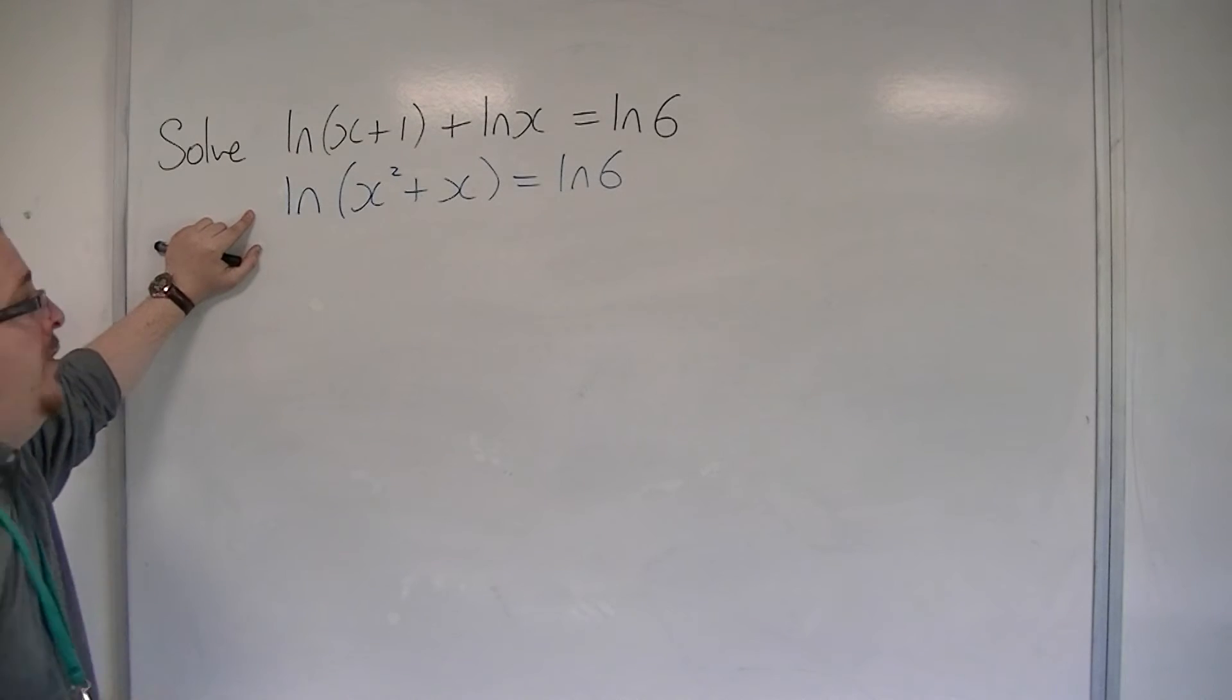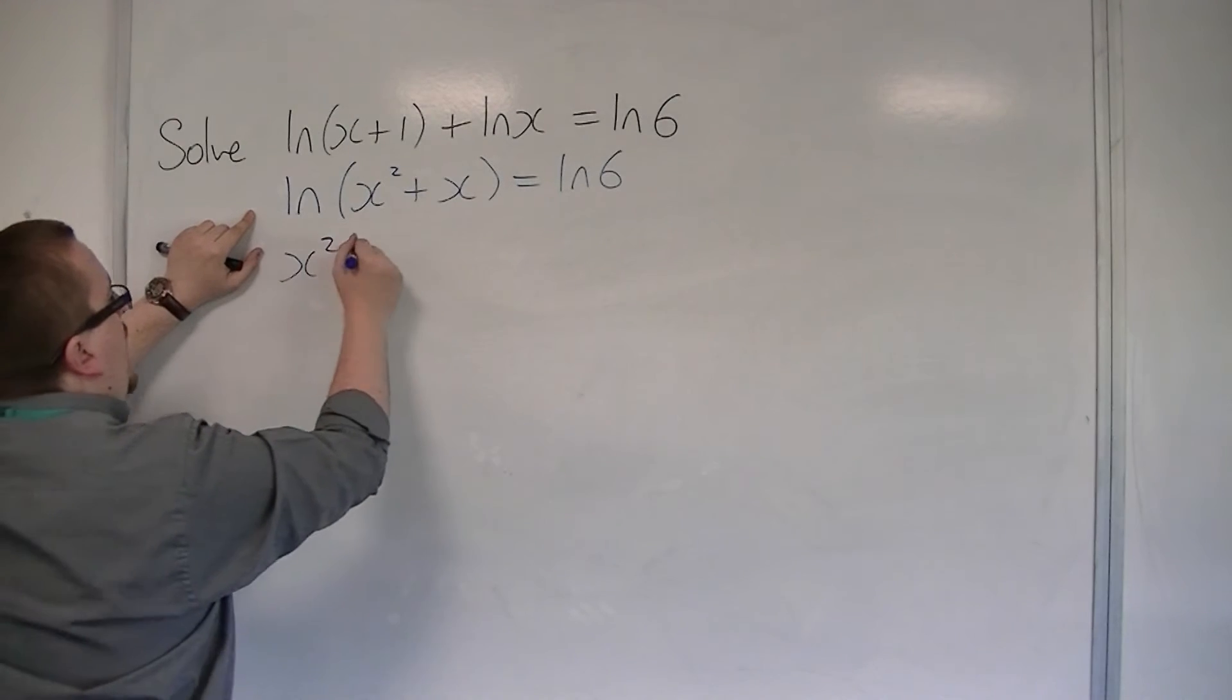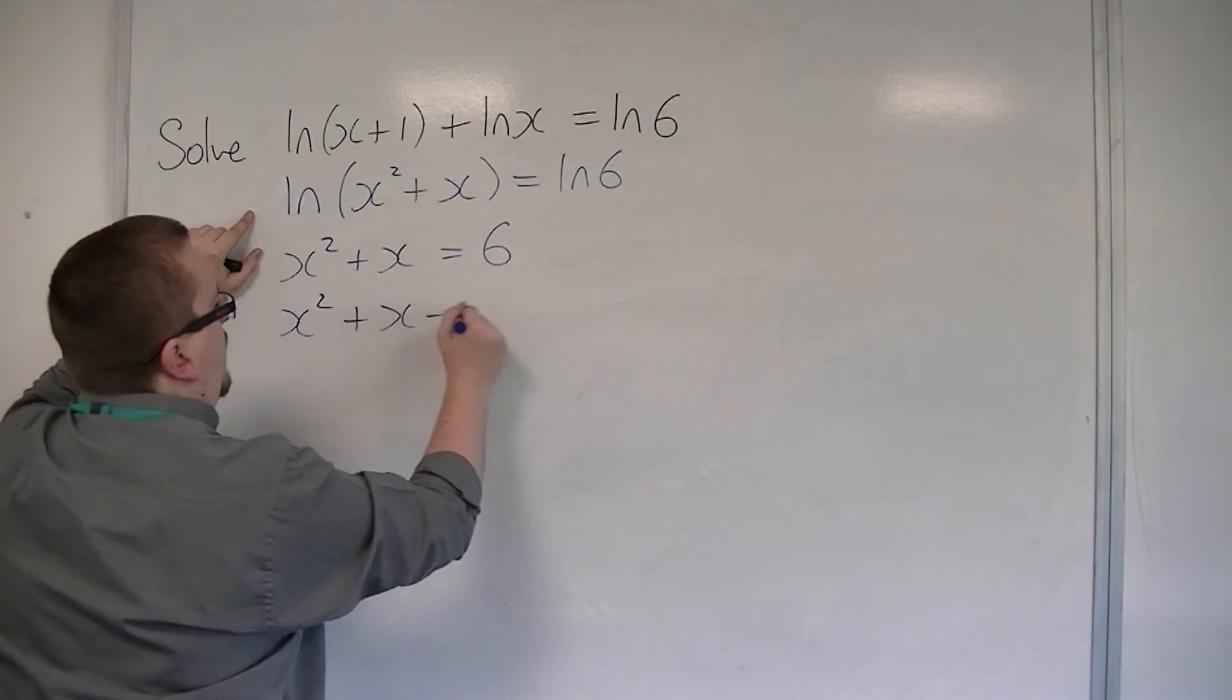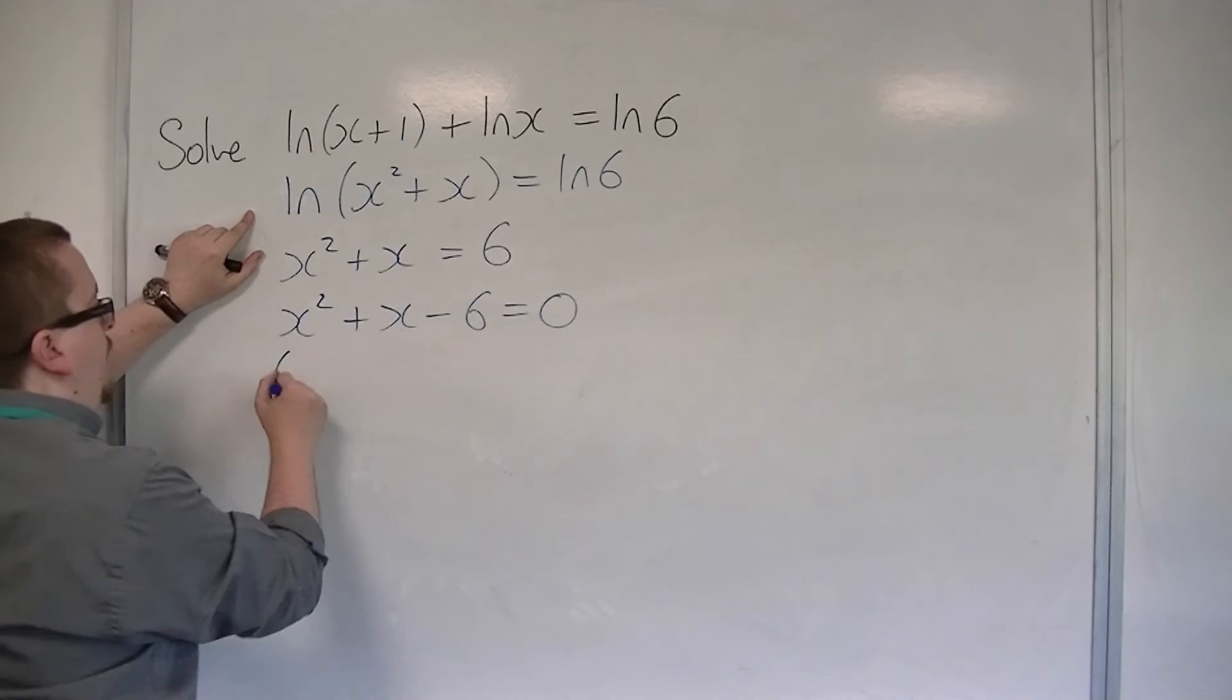You can then e both sides to get x squared plus x equals 6. So take 6 from both sides and then factorise.